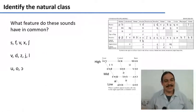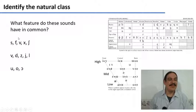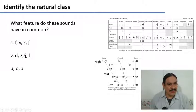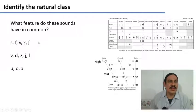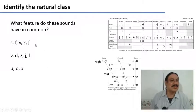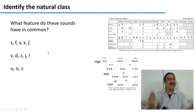Let's try to put this into practice. We have these sounds grouped into three sets. What feature do these five sounds have in common? What feature do these other five sounds have in common? And what feature do these three sounds have in common? Try to find one feature common to each group, and use the IPA table to help yourself find the features. Please pause the video.